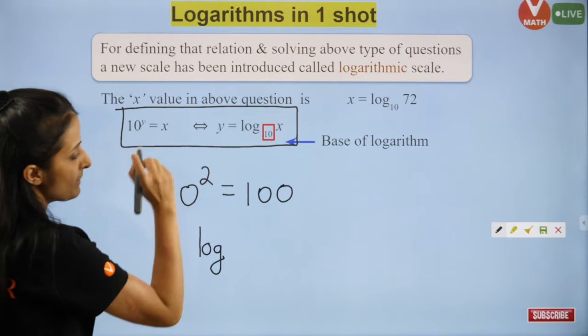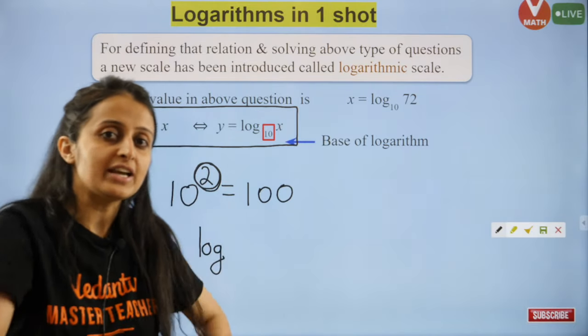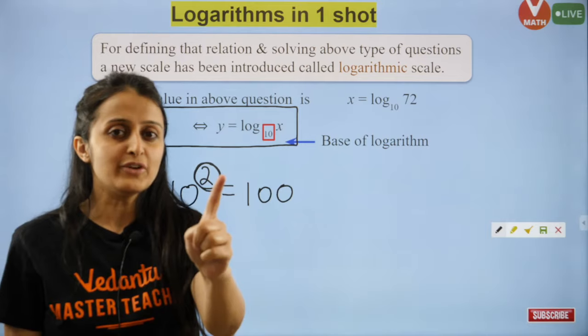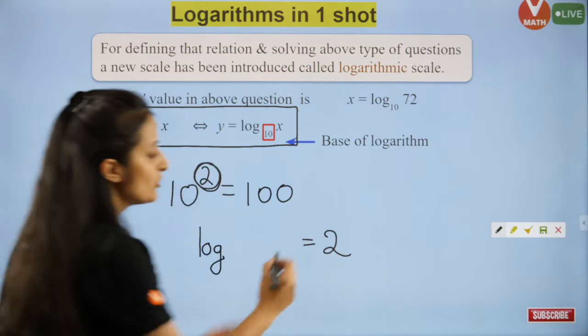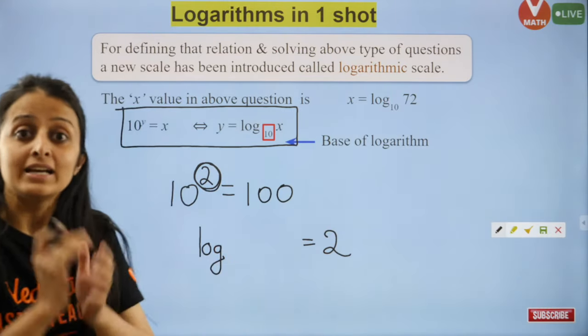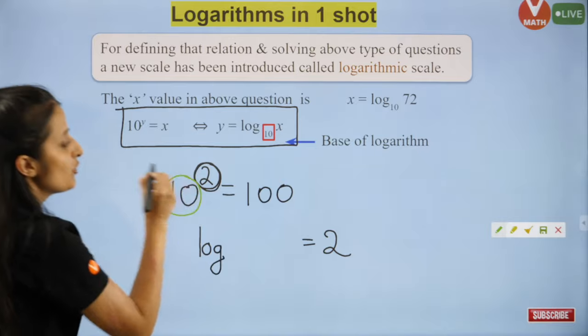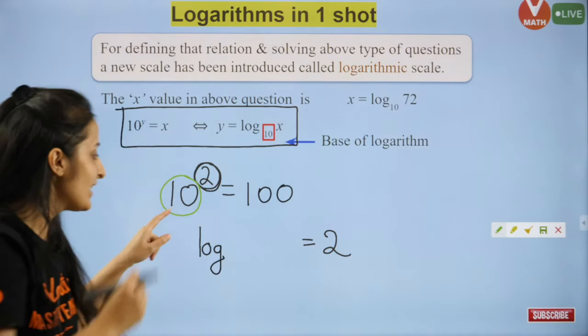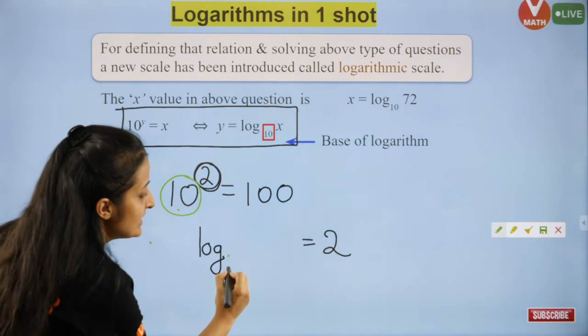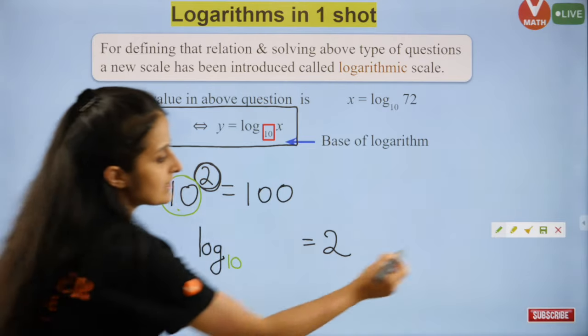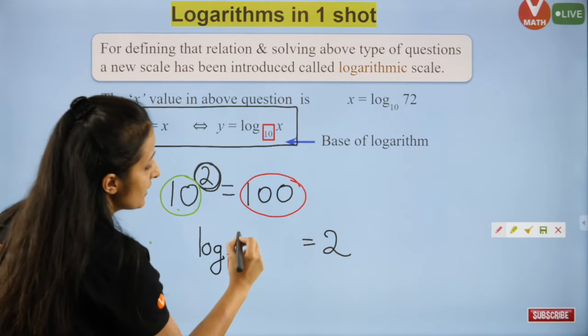Listen to this super carefully. 10 square is 100. The way to remember this - first, whoever is in power, in this world whoever is in power has the maximum say. So this 2 we give a separate seat. You sit over there comfortably. The 10, because of whom he reached power, that one becomes the base.